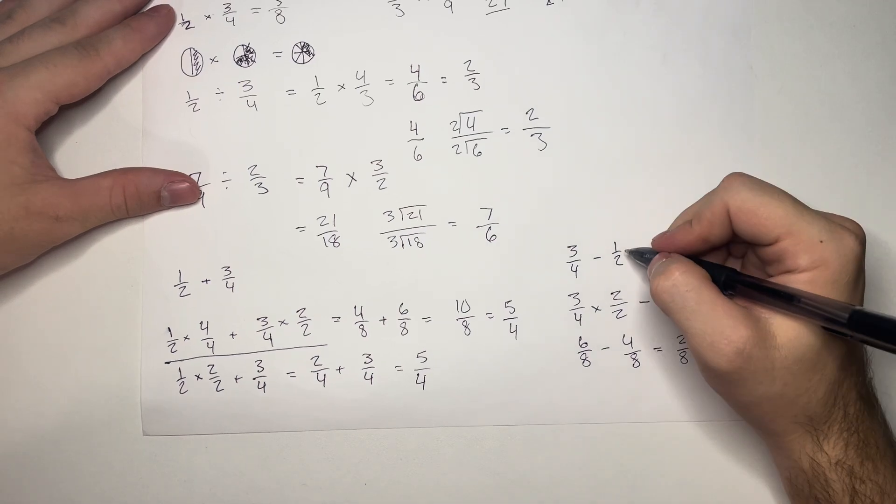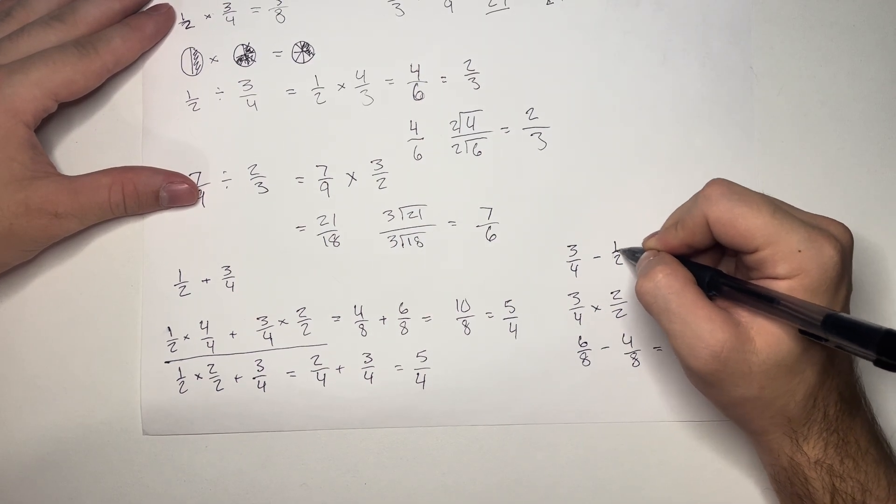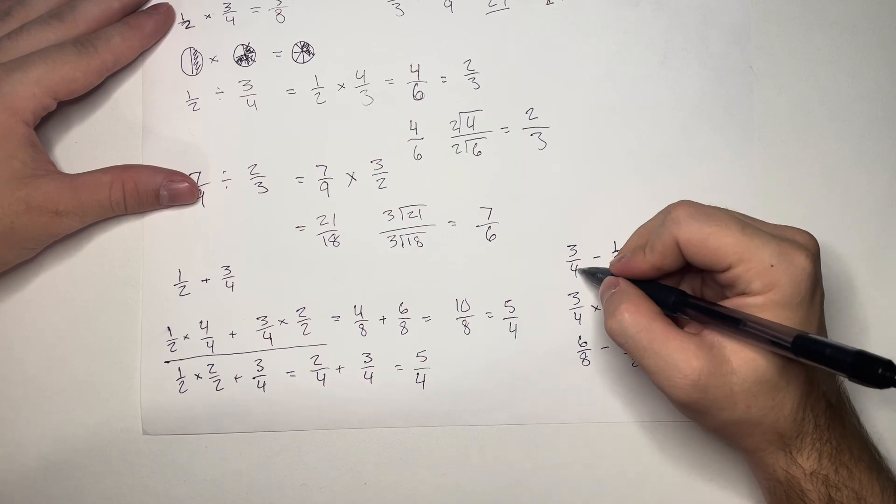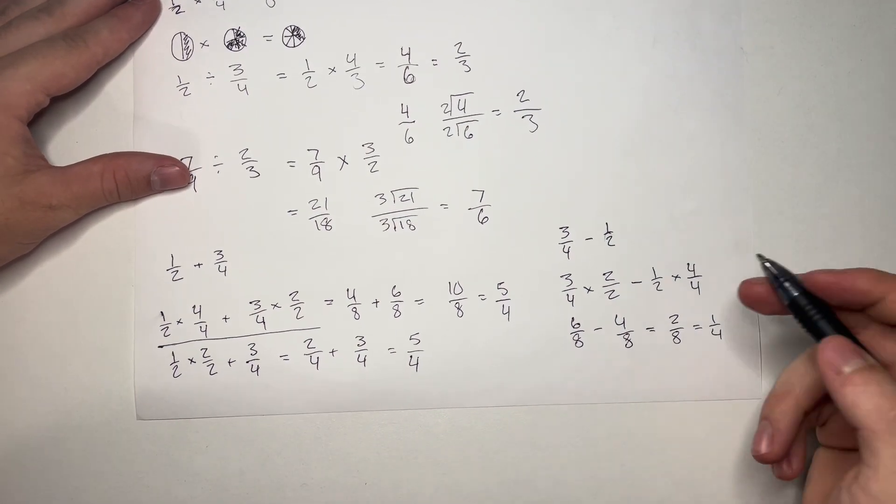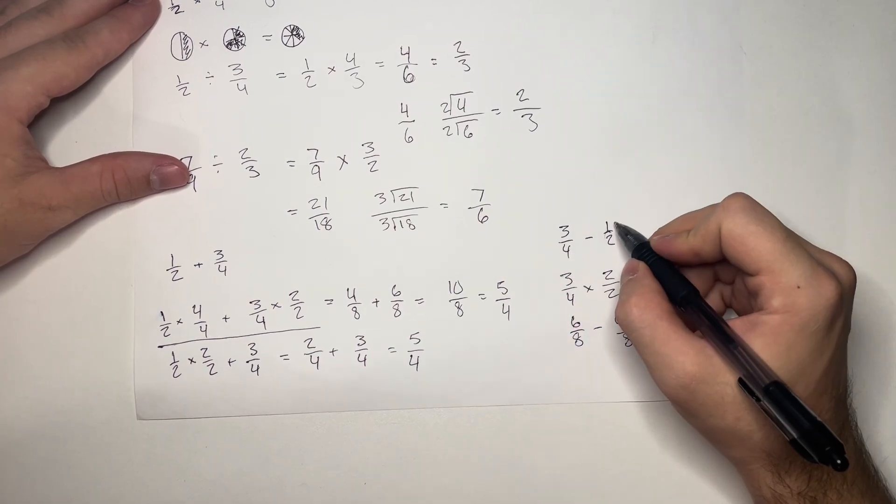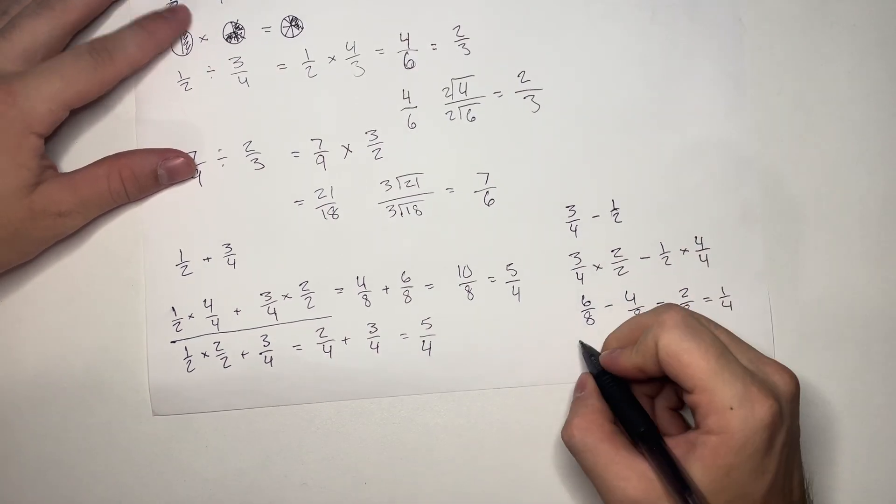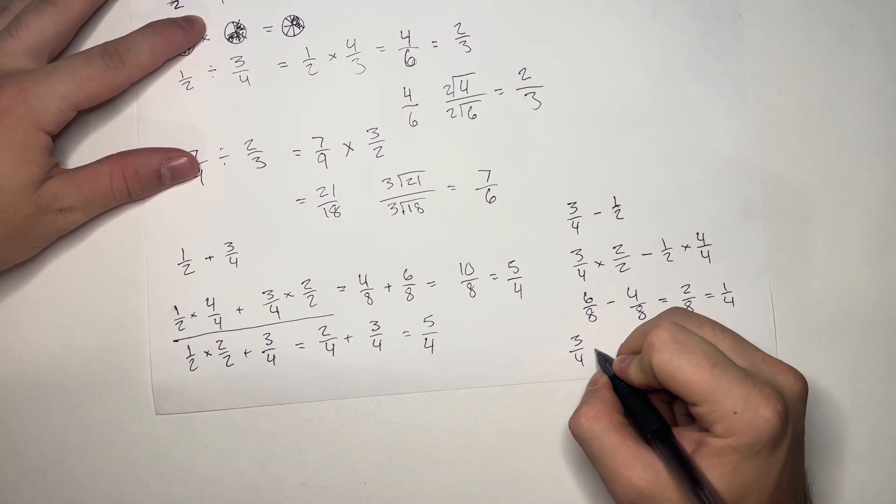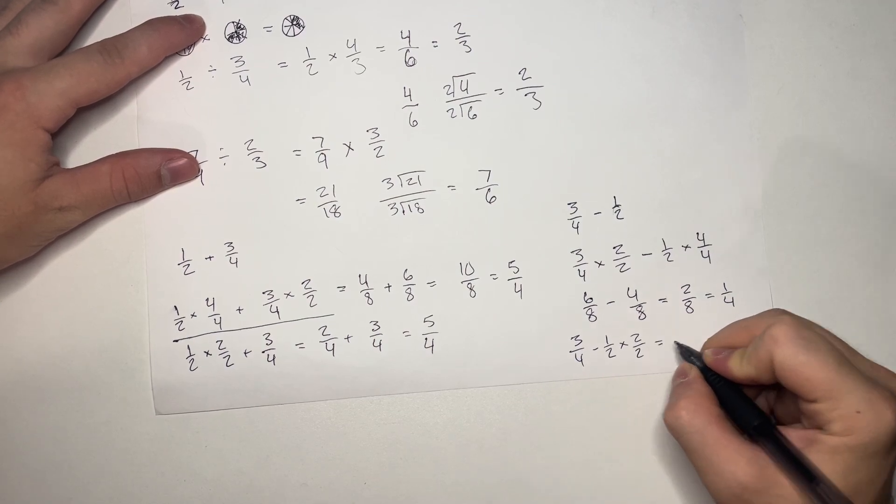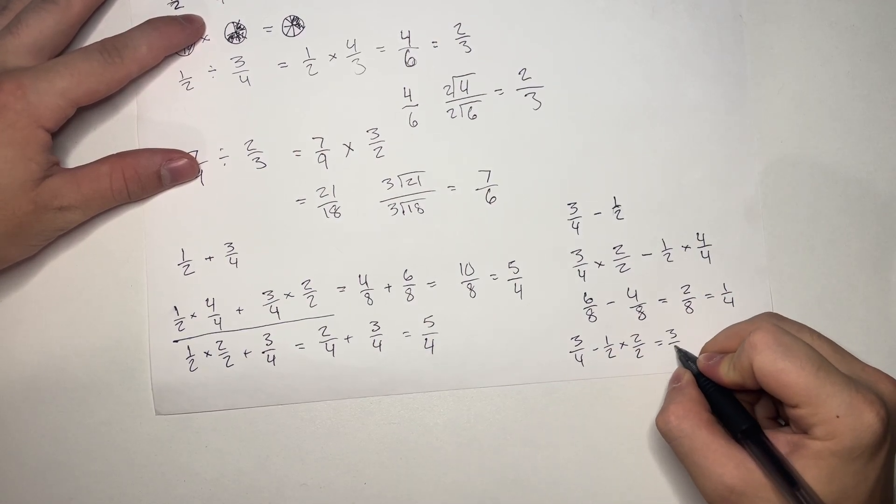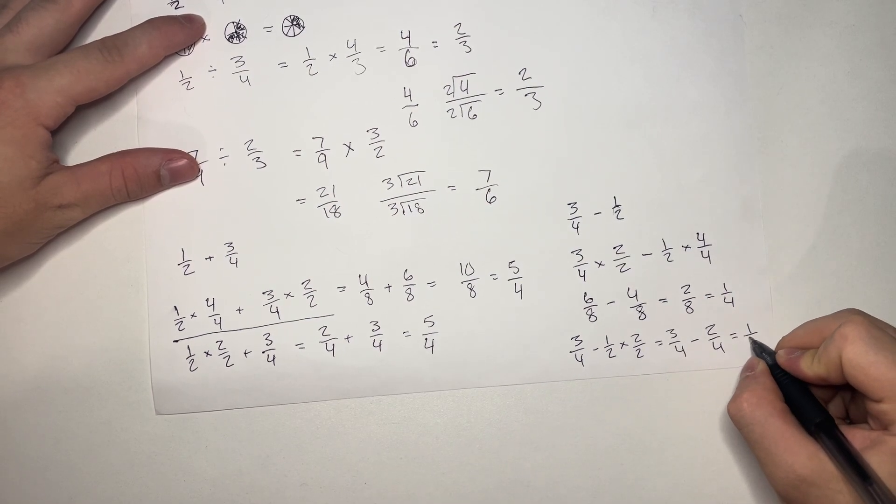And again, since this number, this denominator, can be multiplied to equal this denominator, we don't have to multiply both sides. We can simply multiply this side to equal this side. Let me show that now. 3 over 4 minus 1 over 2 times 2 over 2 is equal to 3 over 4 minus 2 over 4, which is equal to 1 fourth.